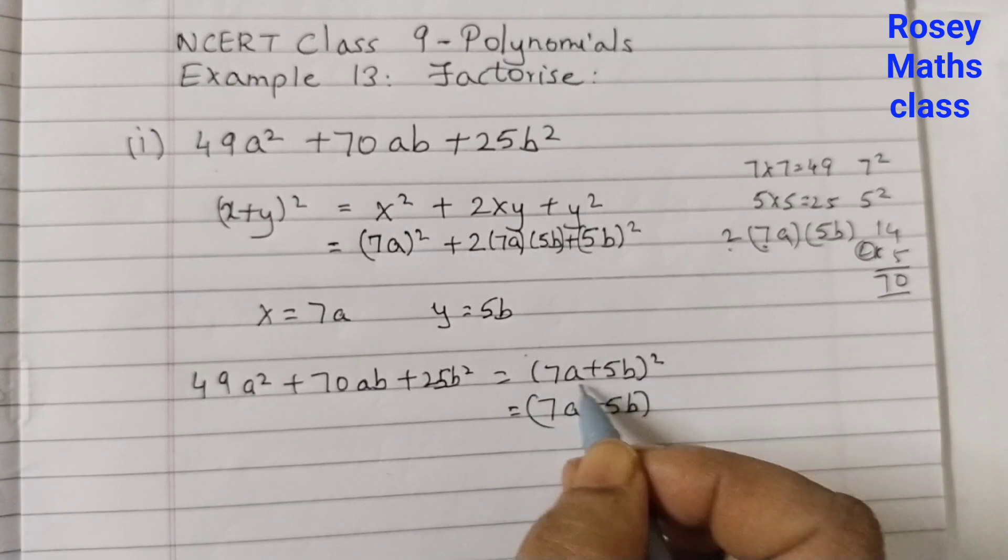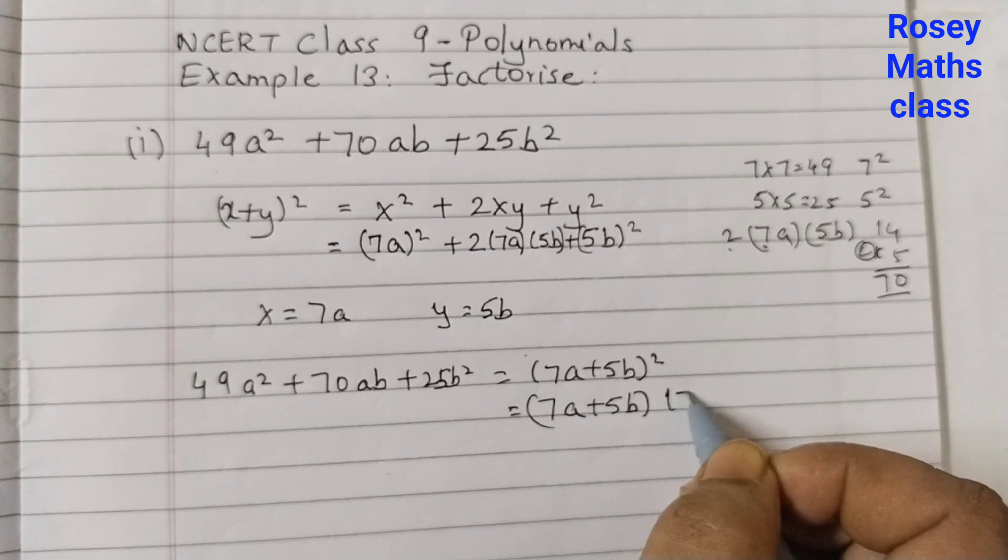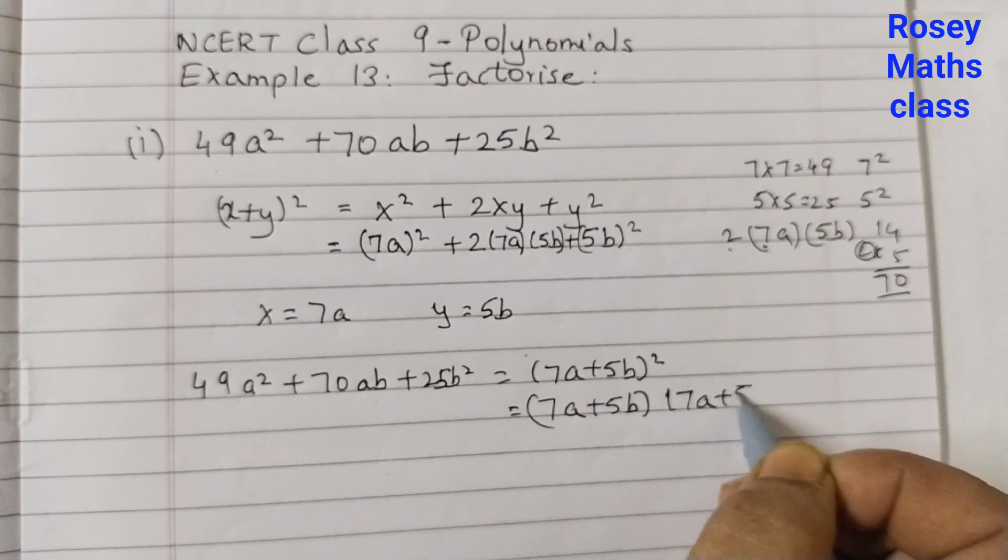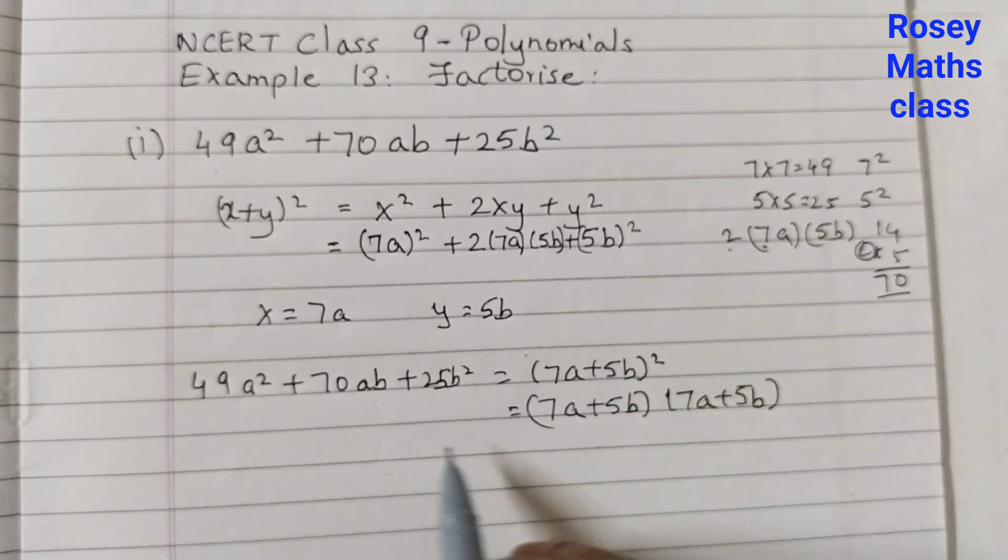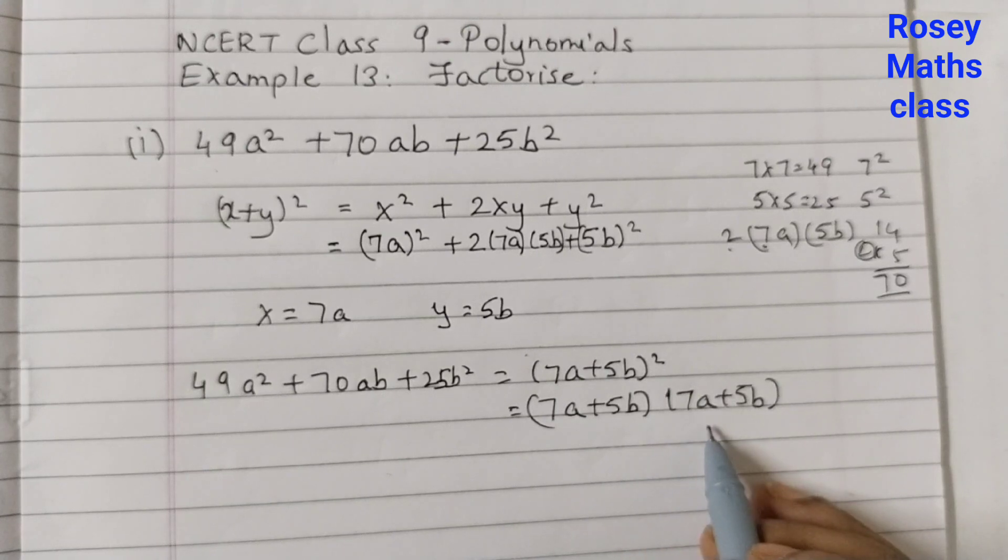There is a 2 here. That means this is multiplied twice. 7a plus 5b into 7a plus 5b. And this is your answer. These are the factors.